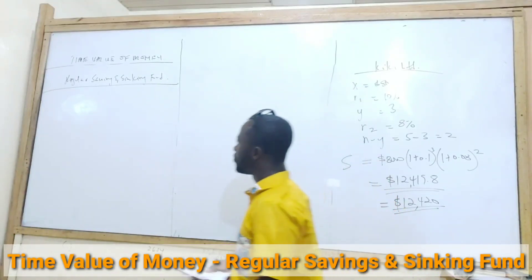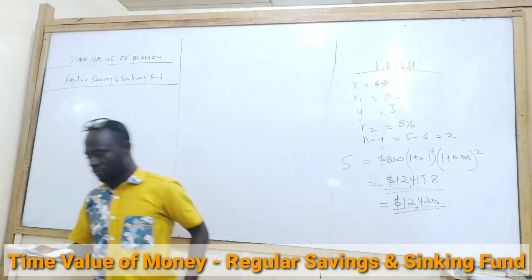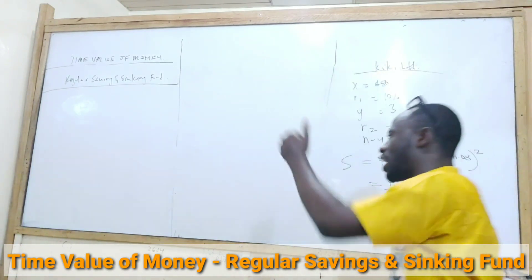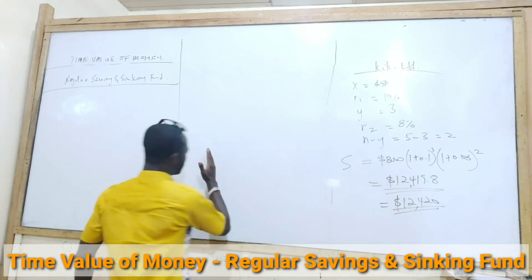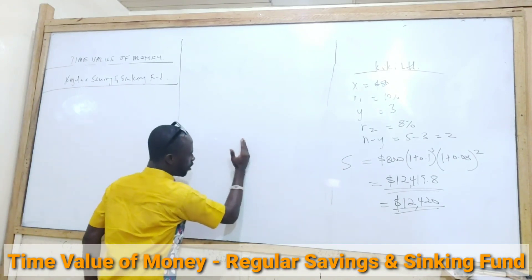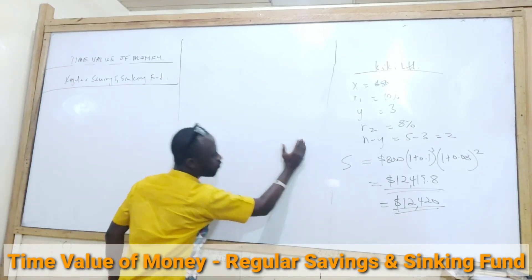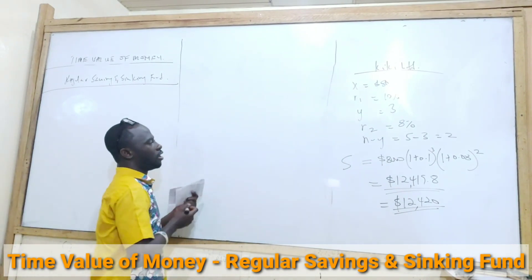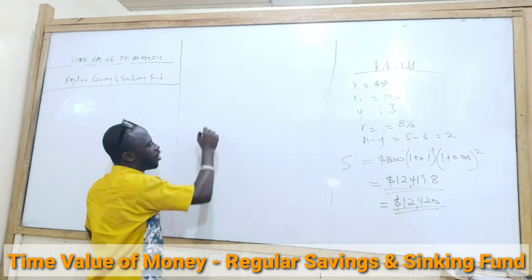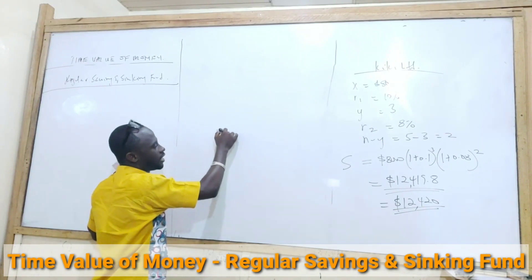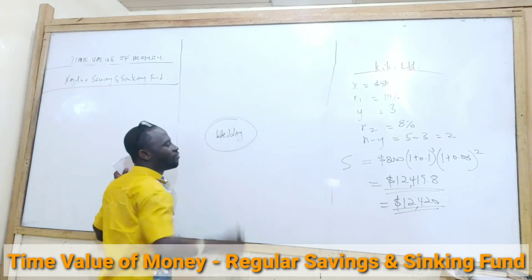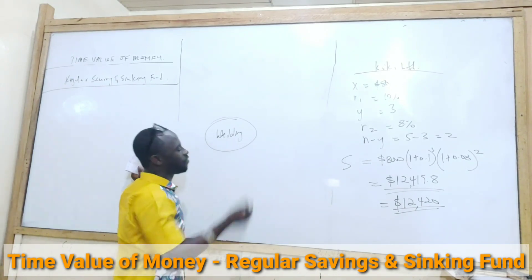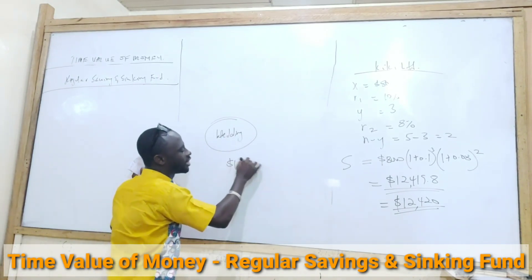Regular savings and sinking funds. This is where an individual or a company puts the same amount of money in an account over a period of time. For example, if I have a plan for my wedding, I can be saving in an investment account towards it. I'll tell the bank that every month I'm going to put in $1,000.